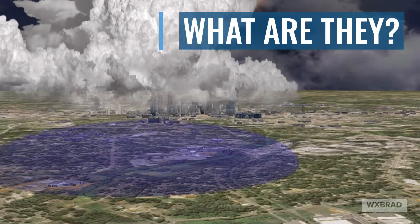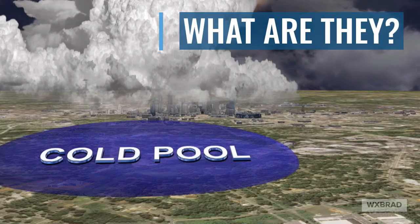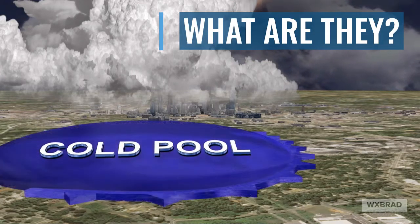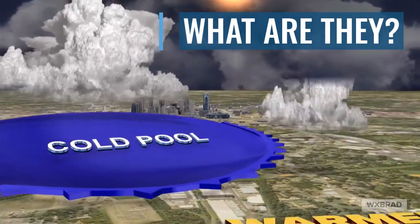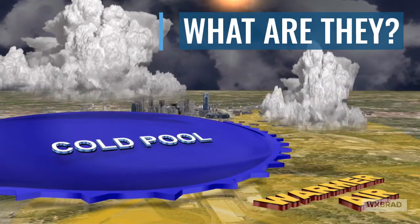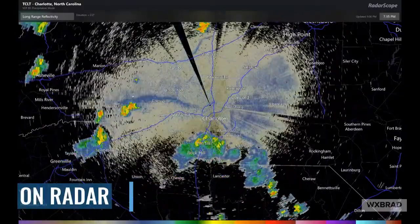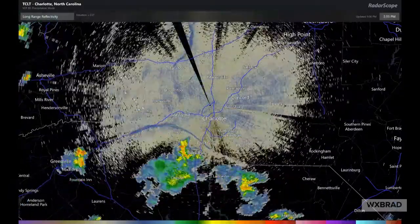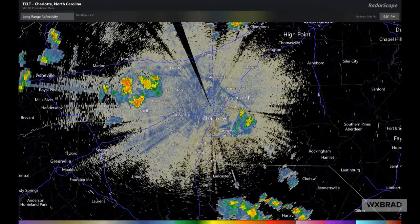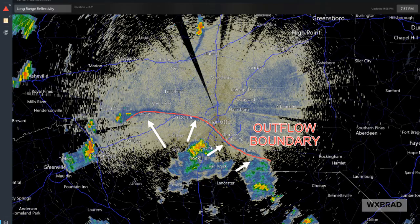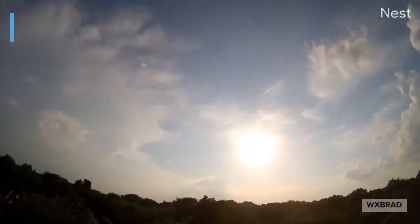So what are these outflow boundaries? They are produced by showers and thunderstorms. Typically, a shower or thunderstorm produces rainfall which then cools the air. That cooler air will rush out in all directions away from the storm. This is like a mini cold front, and oftentimes this will create new storms. They're going to look like these blue lines or green lines you see on the radar — you can see them shooting across the screen. That's an outflow boundary on radar.